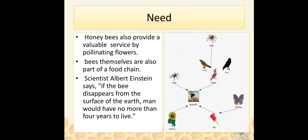Honeybees also provide a valuable service by pollinating flowers. Bees themselves are also part of a food chain. Scientist Albert Einstein said, 'If the bee disappears from the surface of the earth, man would have no more than four years to live.'